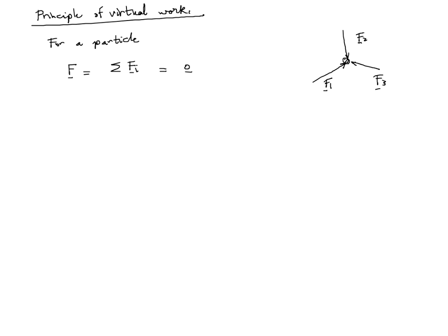If we imagine a purely imaginary displacement of the body, and that vector of displacement — because it is imaginary — we are going to call delta U. Then, if we compute the dot product of F and delta U, and if equilibrium holds, we get zero regardless of the choice of delta U. So if equilibrium holds, the work done by the resultant force for any arbitrary small virtual displacement delta U is equal to zero.